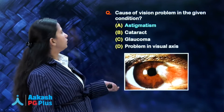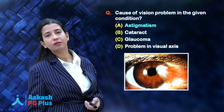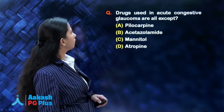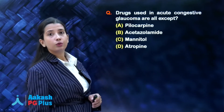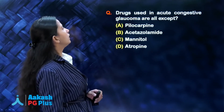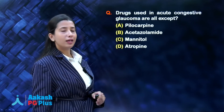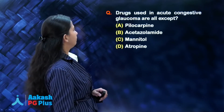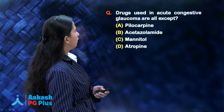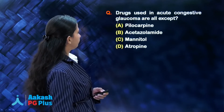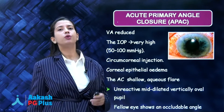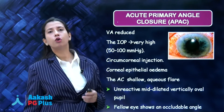The answer to this question was astigmatism, as already explained. Next question: drugs used in acute congestive glaucoma are all except — pilocarpine, acetazolamide, mannitol, or atropine? Let us first learn what is acute congestive glaucoma.